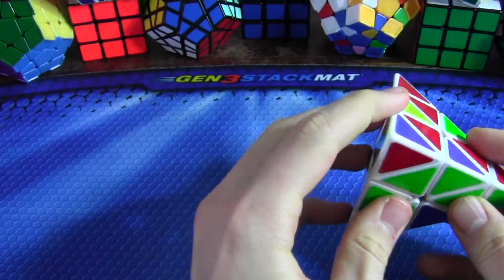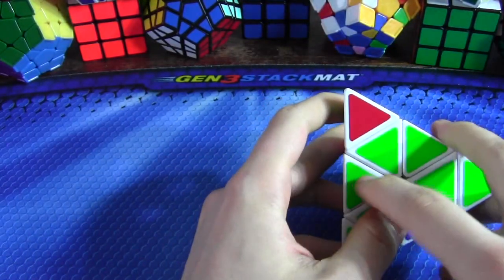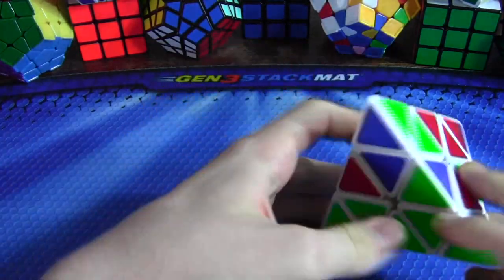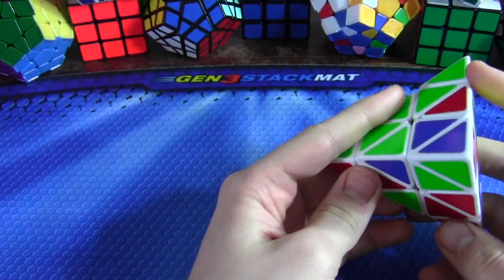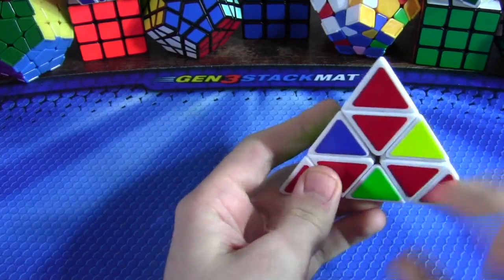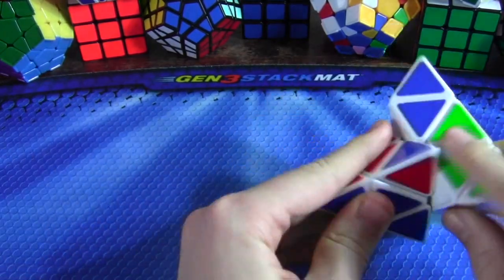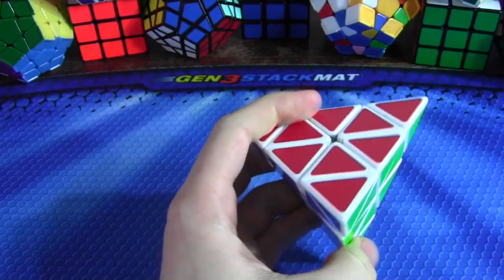And then this will go in the right place if I, it'll be flipped though. So I'm not sure if that's what I did, probably, because it was a 3.21. So then I'd insert this piece and then do an edge flip.